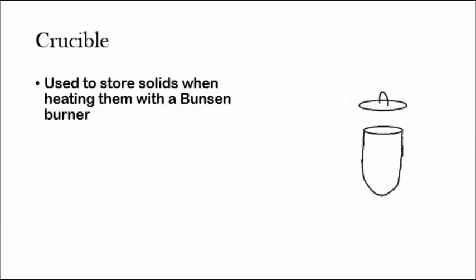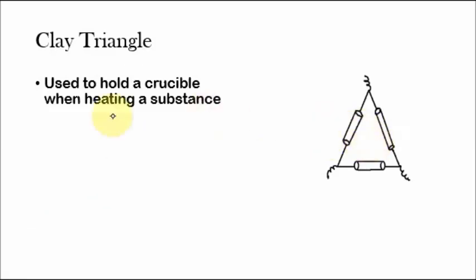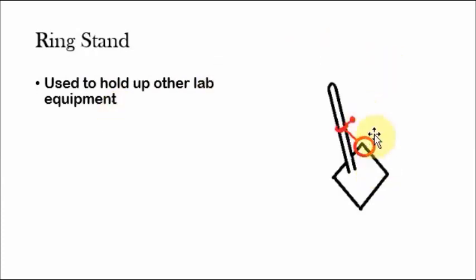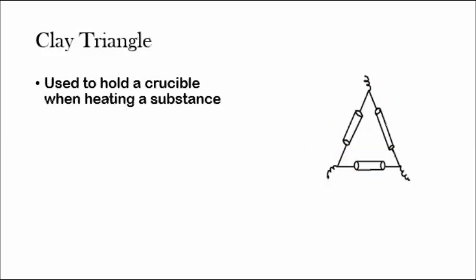And then a clay triangle is used to hold a crucible when heating the substance. So basically, let's go back here to the ring stand. So what you do is, whenever you put the Bunsen burner at the very bottom, then you'd put the clay triangle on top of this ring stand, this clamp here, this ring, and then on top of the clay triangle you'd put the crucible so you wouldn't have to actually hold the crucible in the flame.